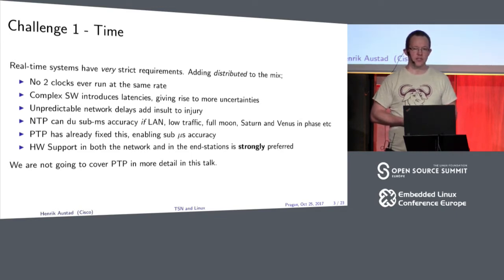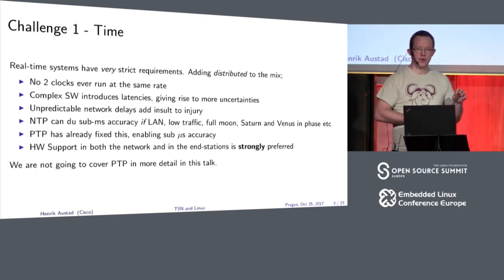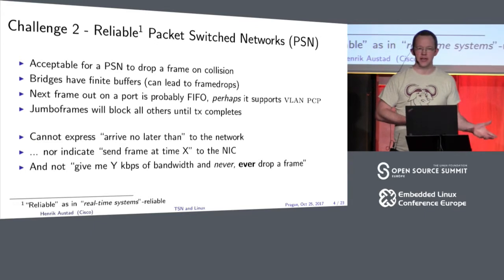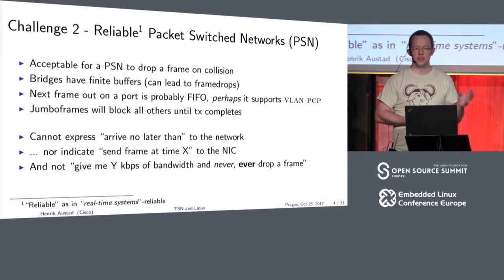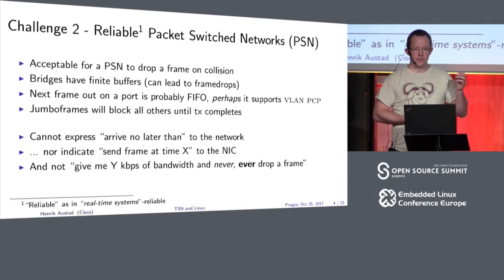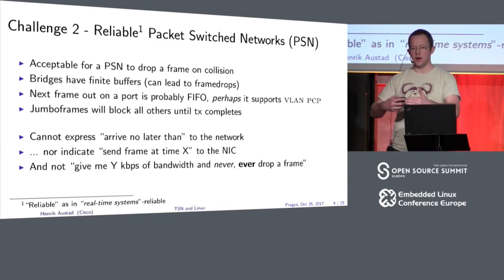You have to have hardware support for PTP to work properly with decent accuracy. The next challenge is a reliable packet-switched network — and by reliable I don't mean the switches don't go down. I mean real-time reliable: frames will go through the network deterministically, you won't lose frames, and they will be there on time. It's perfectly acceptable for a network to just drop your frames if you have collisions or the buffers fill up.